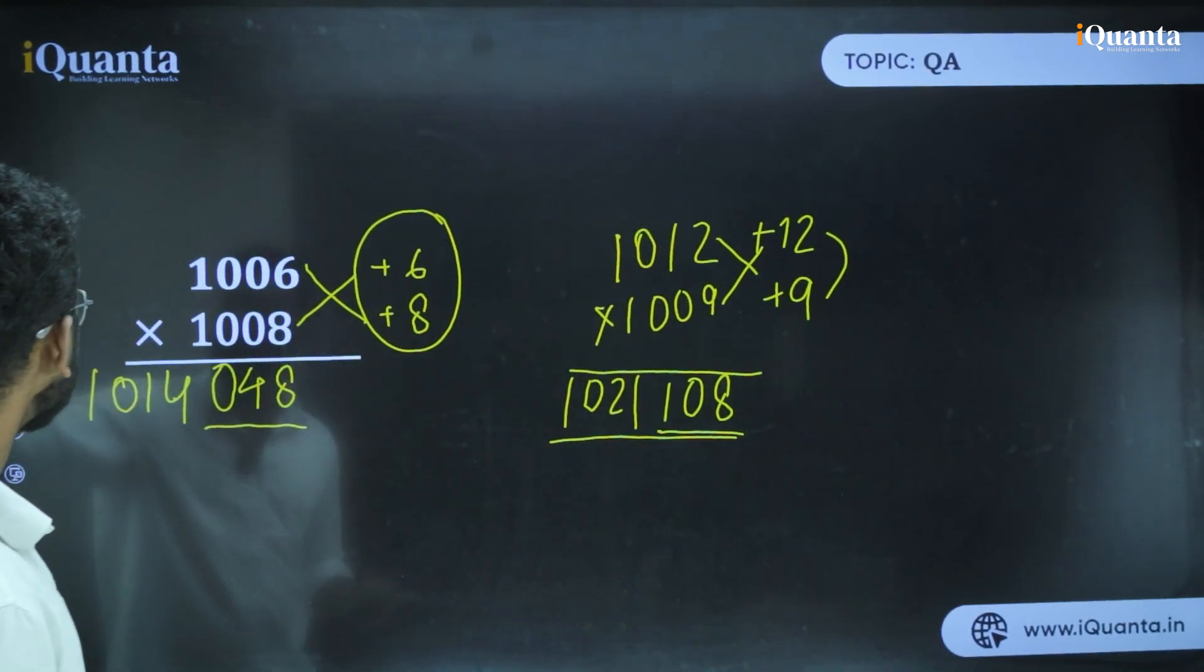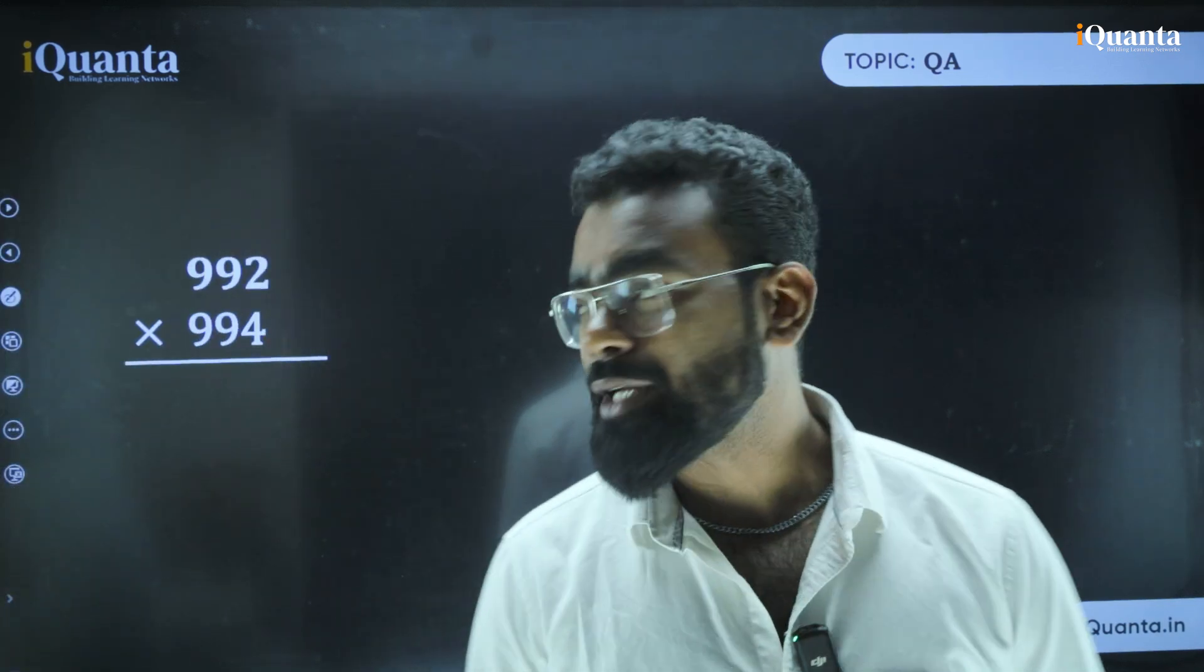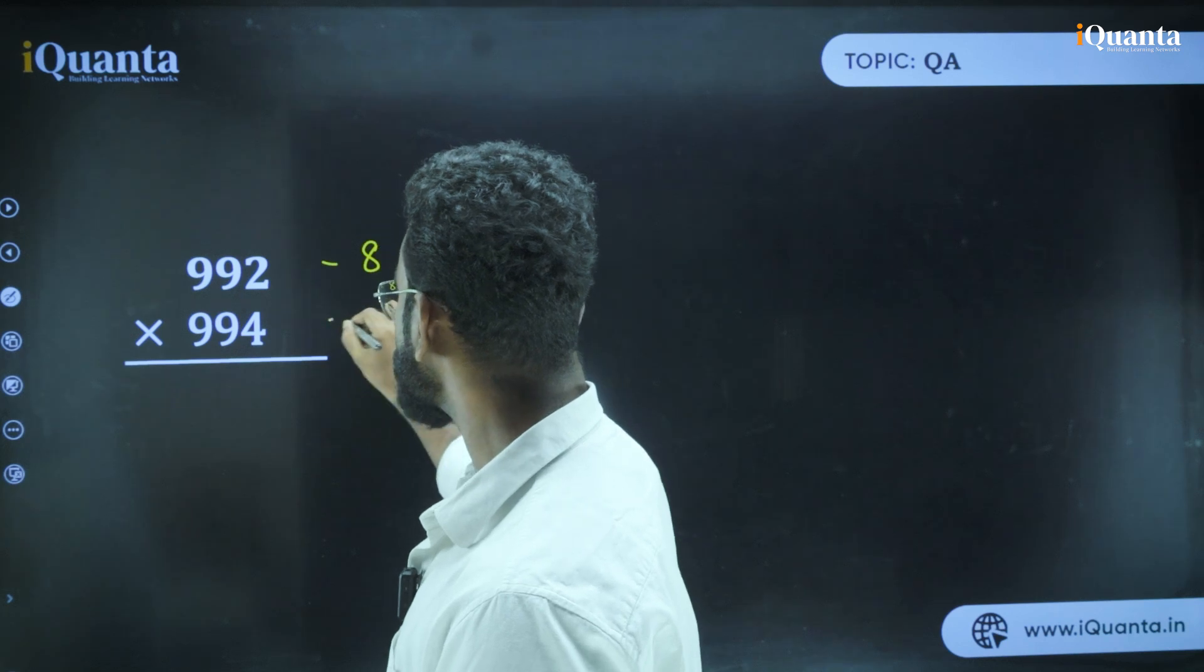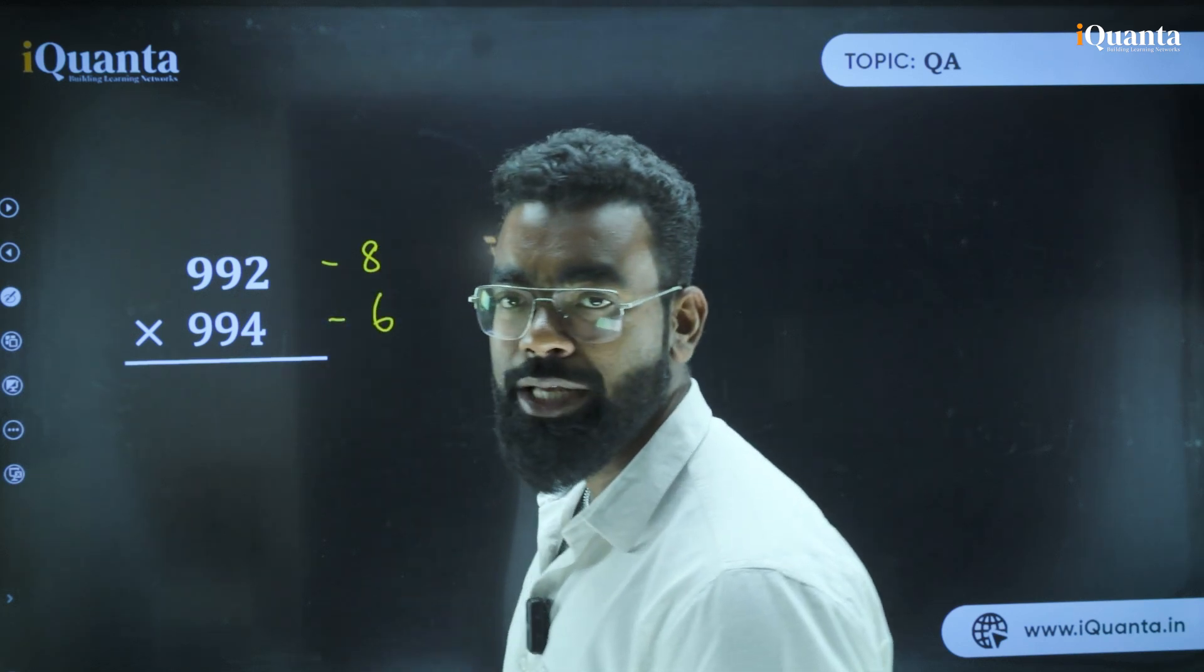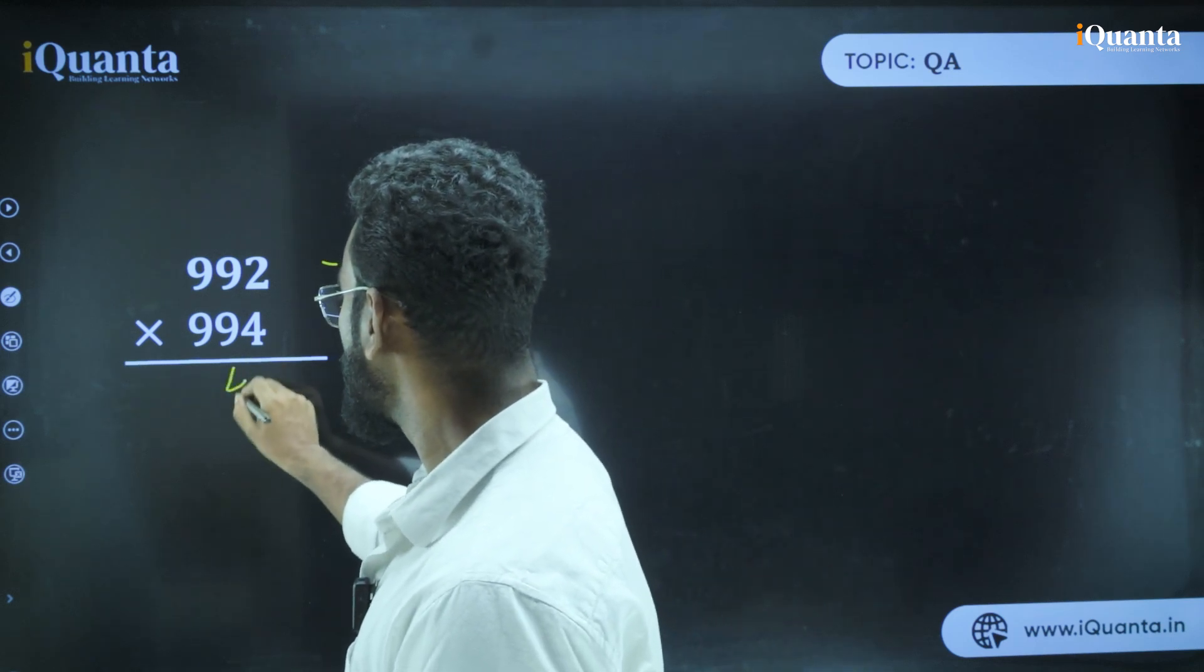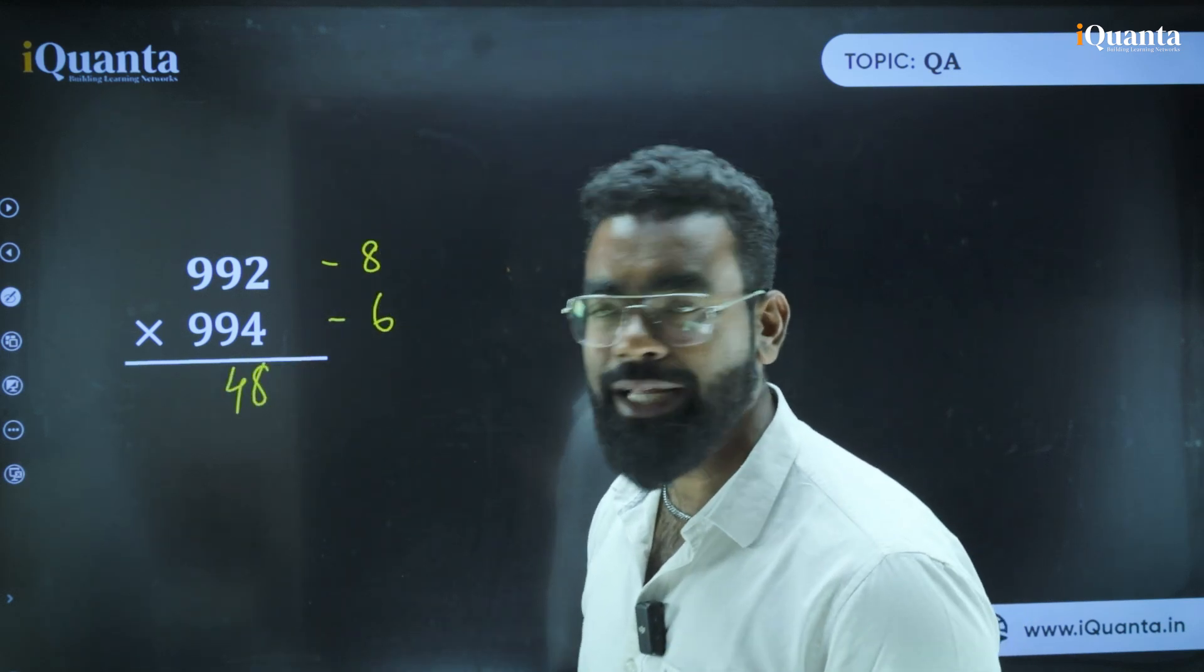The next thing we are going to discuss are numbers which are less than 1000, like 992 into 994. If you see this, this is minus 8 and this is minus 6. Now what is 8 into 6? Minus into minus is basically positive. So 8 into 6 is 48.